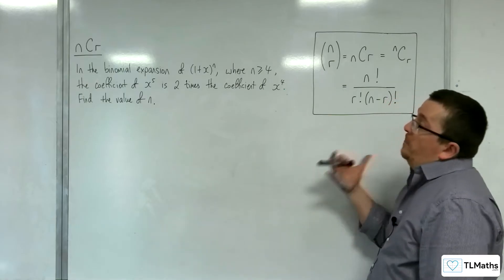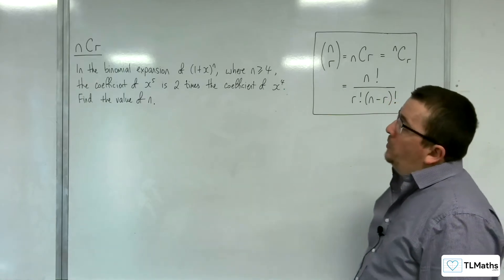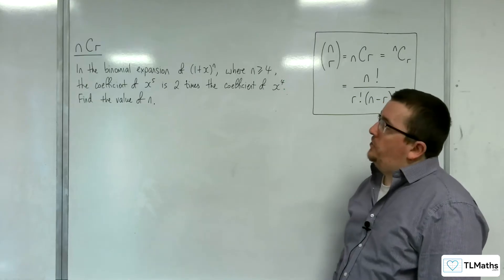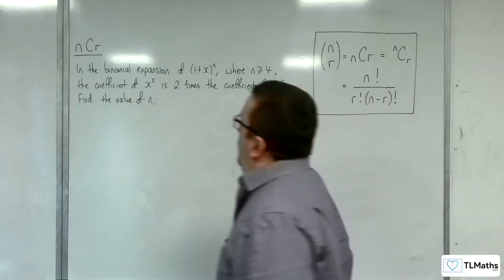In this problem, we have in the binomial expansion of 1 plus x to the n, where n is greater than or equal to 4, the coefficient of x to the 5 is 2 times the coefficient of x to the 4. Find the value of n.